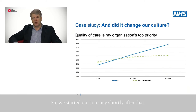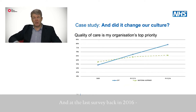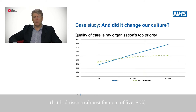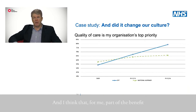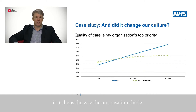So we started our journey shortly after that. By about 18 months to two years in, that had risen to about two thirds of staff thinking quality of care was the top priority. At the last survey back in 2016, that had risen to almost four out of five — 80% — well above the national average. Part of the benefit of embedding an improvement approach, putting safety and quality and the user's experience at the centre of how we judge success, is it aligns the way the organisation thinks from top to bottom.